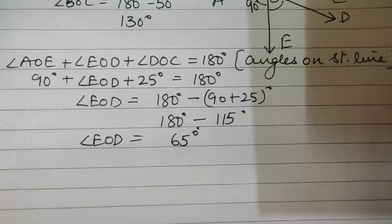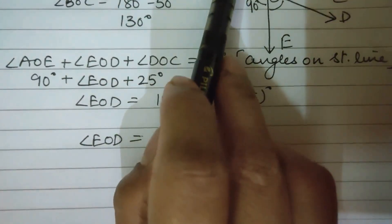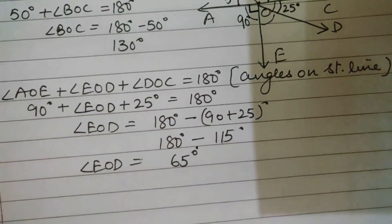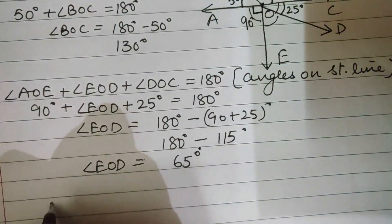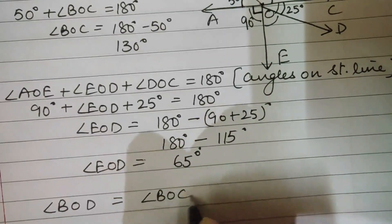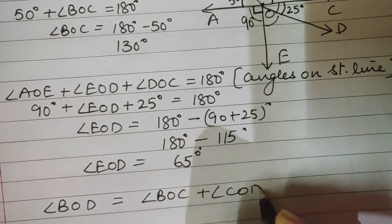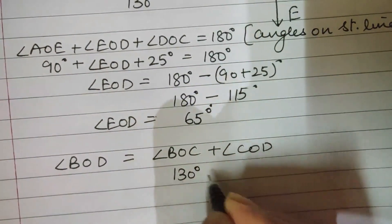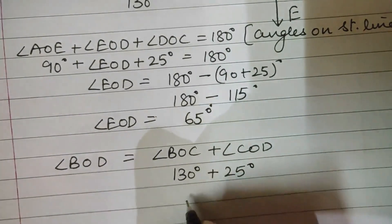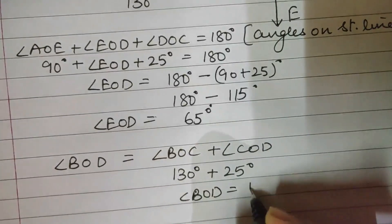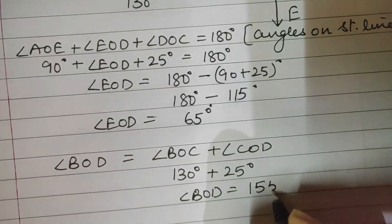Now find obtuse angle BOD. Obtuse angle BOD equals angle BOC plus angle COD. Angle BOC is 130 degrees and COD is 25 degrees. So angle BOD equals 155 degrees.